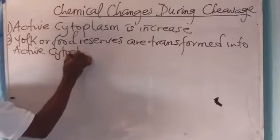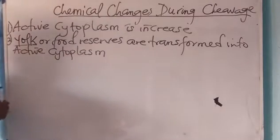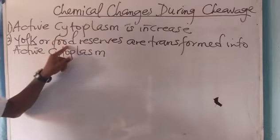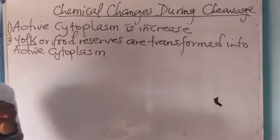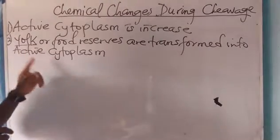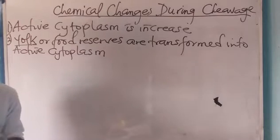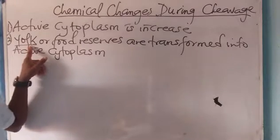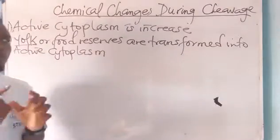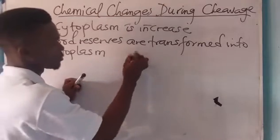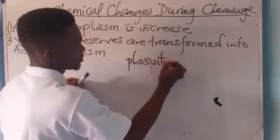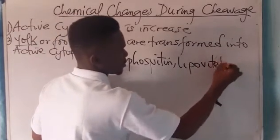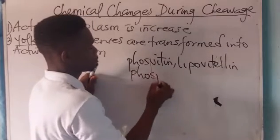Yolk can actually store food and is responsible for the provision of nutrients for the developing embryo. Yolk is not a chemical substance — it is a mixture of different protein substances. These substances are called phosvitine, lipoviteline, phospholipids, and neutral fat.